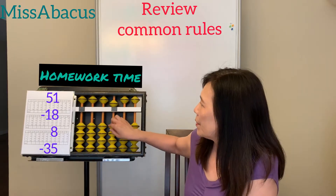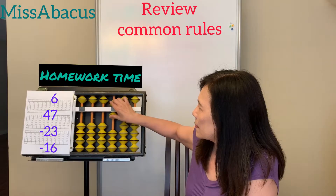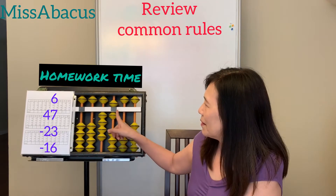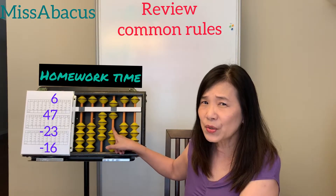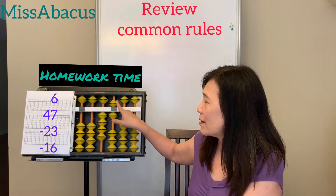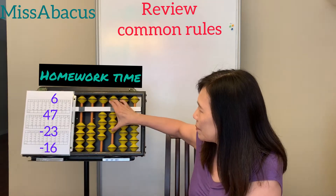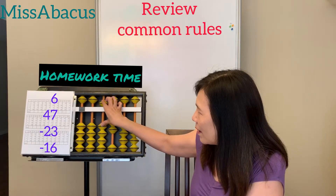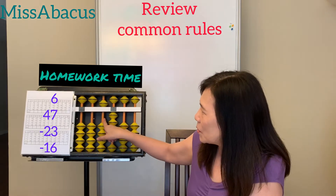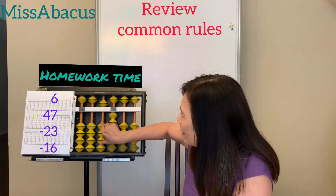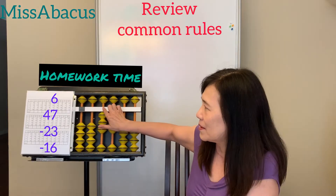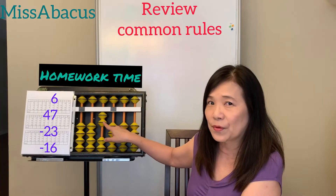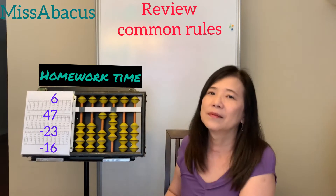Number three: 6 plus 47. For the seven, you only have three left — tens rule: minus three plus ten. Minus three, you have five so up five out two: that's minus three plus ten, that's plus one on the tens place, down by four. Minus 23: 20, up five out three — that's two on the tens place, minus three. Minus 16: minus ten and minus six. Of course minus ten plus four. Answer: 14.